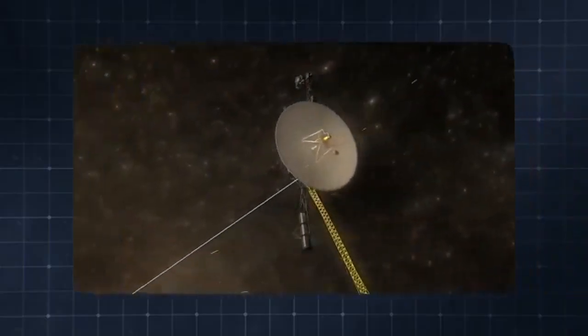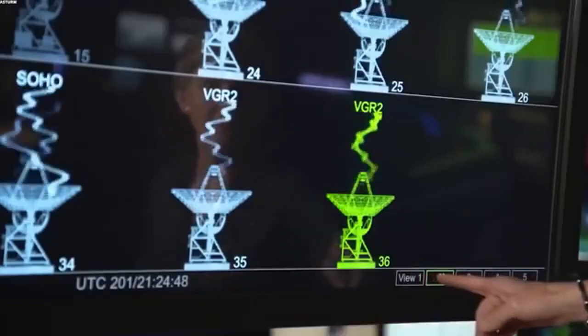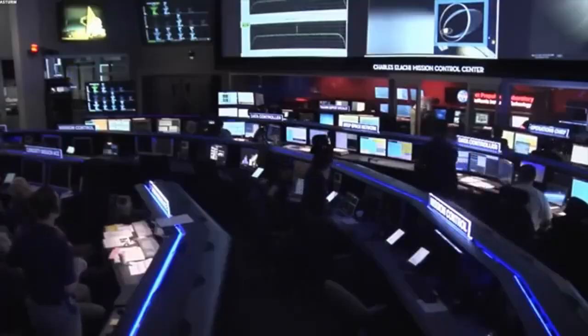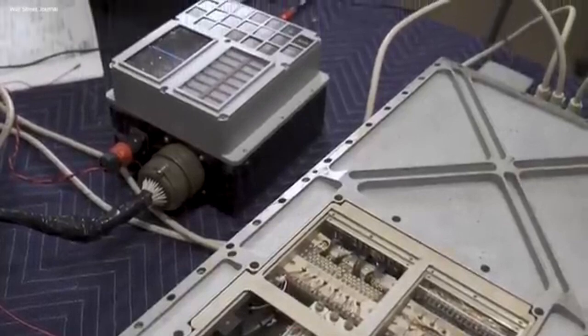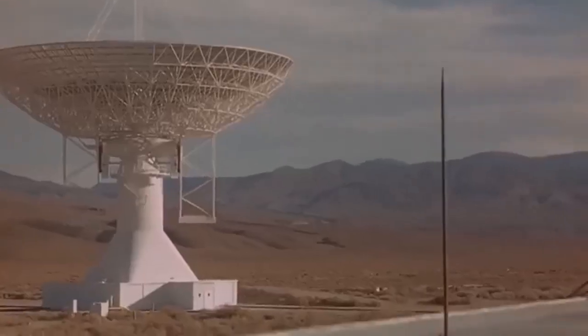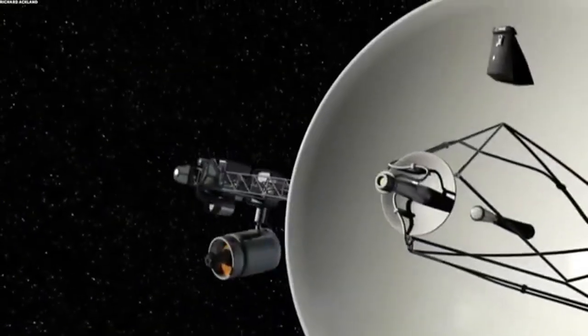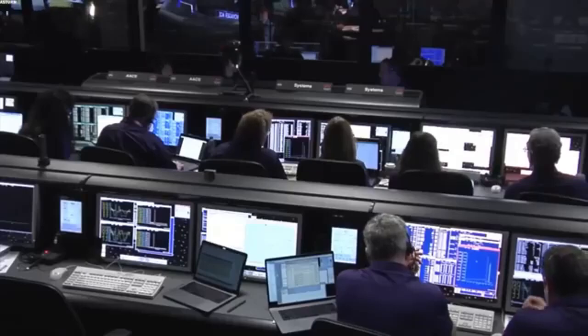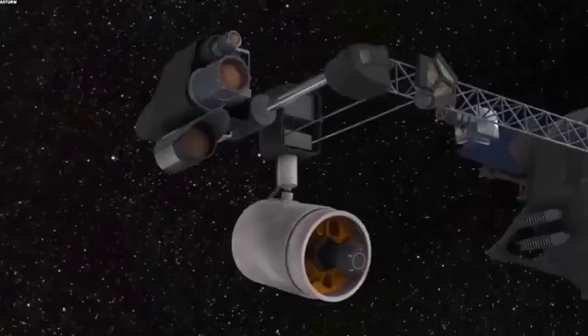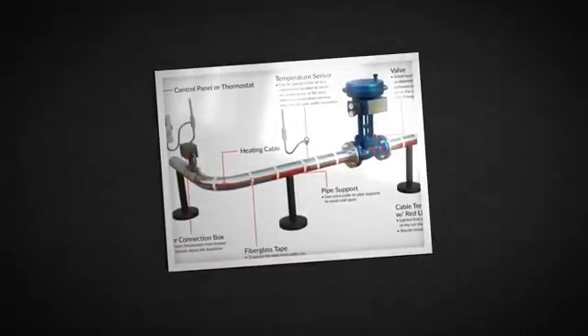The low-energy charged particle instrument examines the composition and energy distribution of low-energy charged particles. The plasma wave subsystem detects and analyzes naturally occurring radio and plasma waves, studying the interstellar medium's properties. The ultraviolet spectrometer measures ultraviolet light intensity from celestial objects. The infrared radiometer analyzes thermal emissions of objects encountered on the cosmic journey. The interferometer examines infrared light interference patterns. The spectrometer measures light absorption and emission, providing clues about the interstellar medium's chemical makeup.